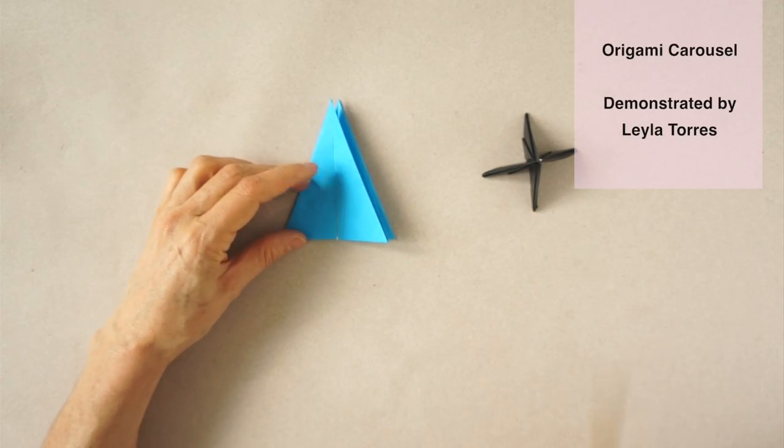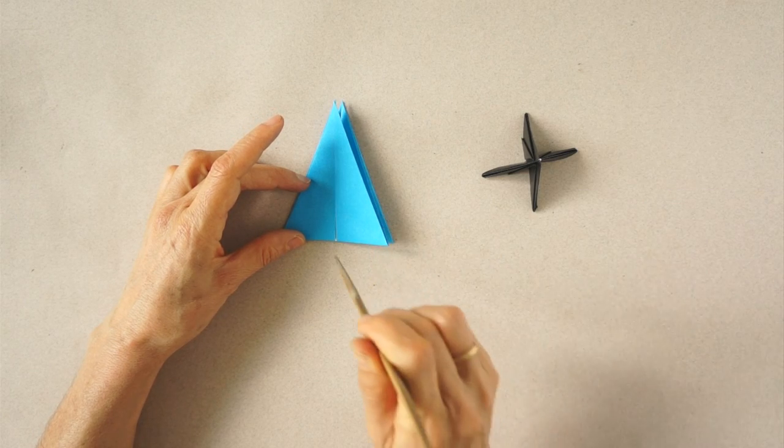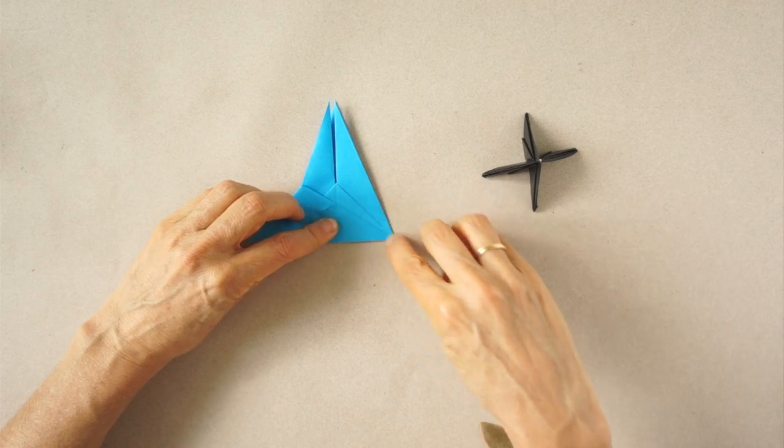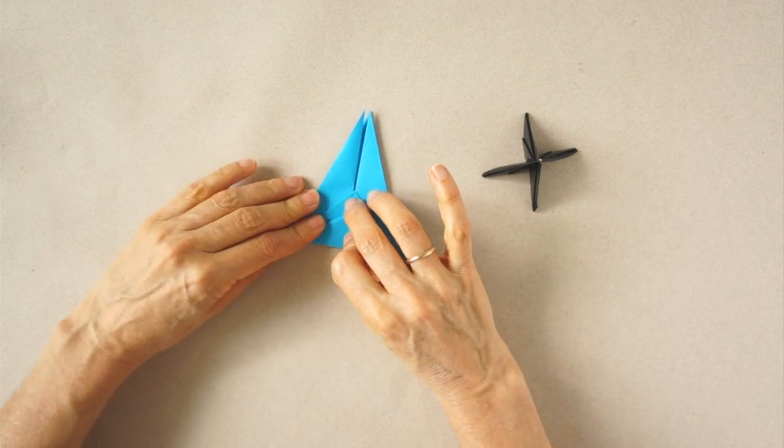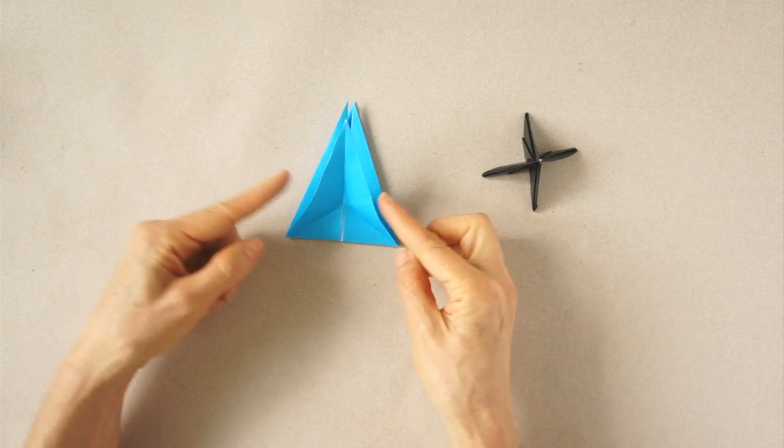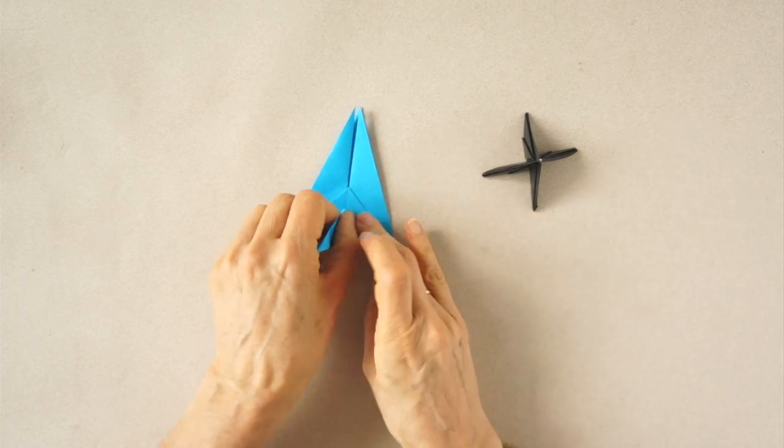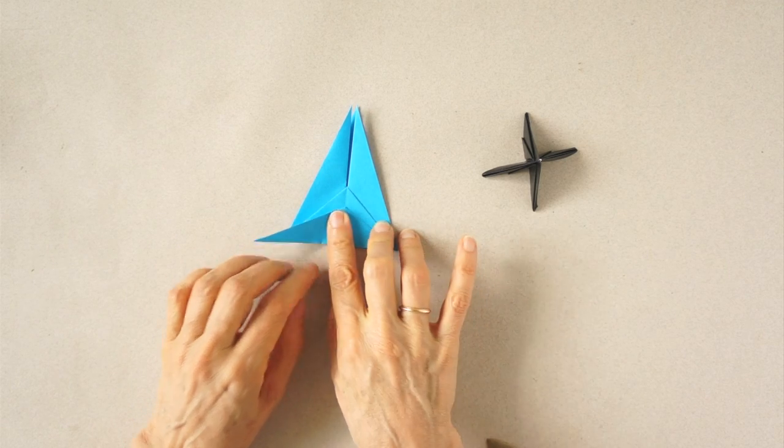Now we are going to create a fold along here. Bring this edge to match this. Now we are going to push and bring these two sides together, creating this narrow flap. We can press it to the left.